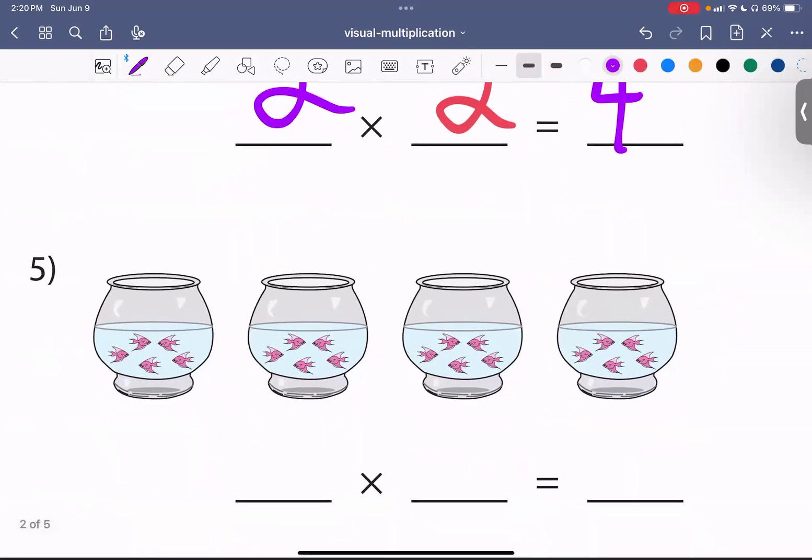And finally we have these fish tanks. So we have one, two, three, four fish tanks. And each fish tank has one, two, three, four, five fish in it. So we have a total of 20 fish. So that's our lesson for today. Thank you for watching and good luck in multiplication.